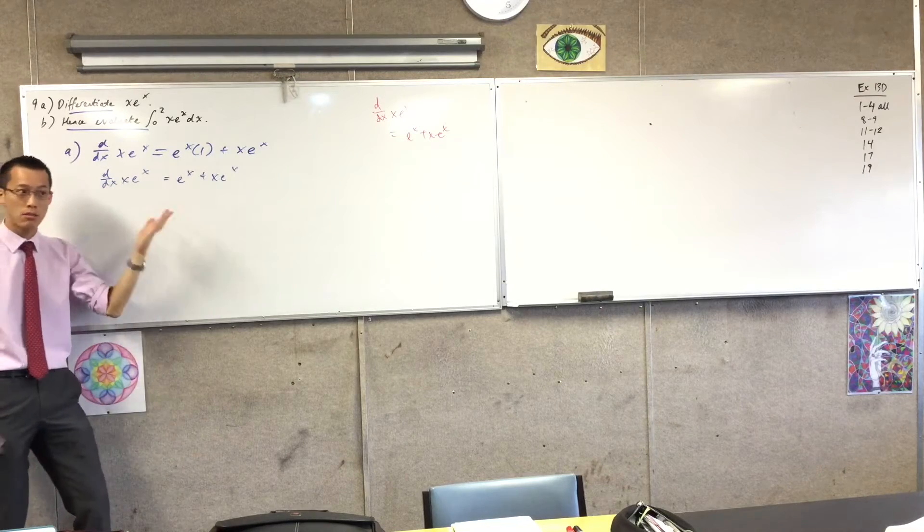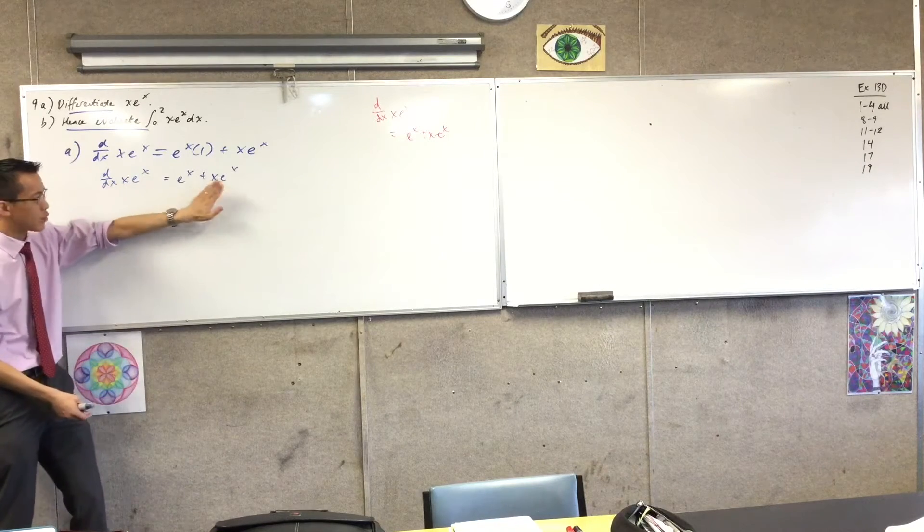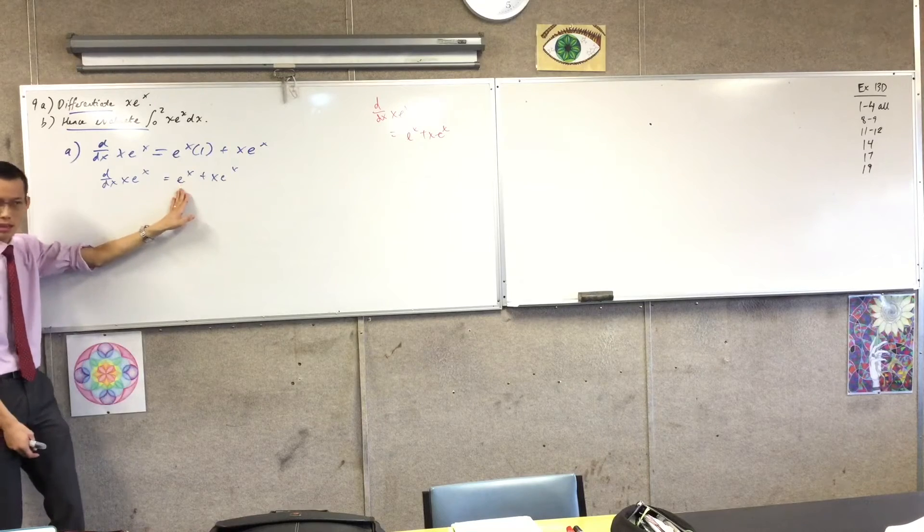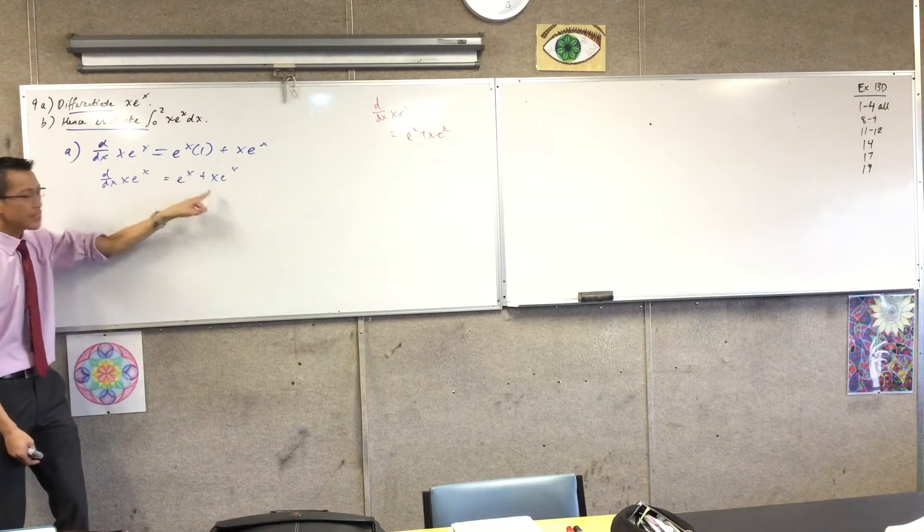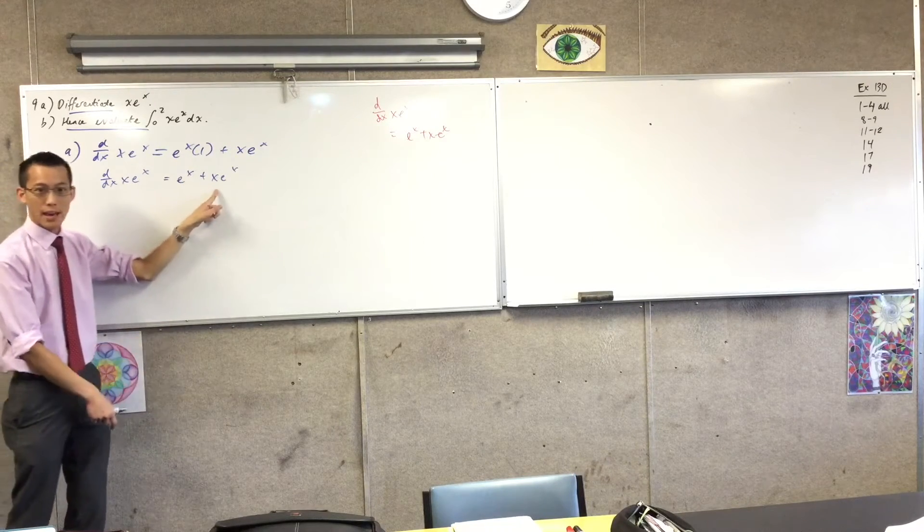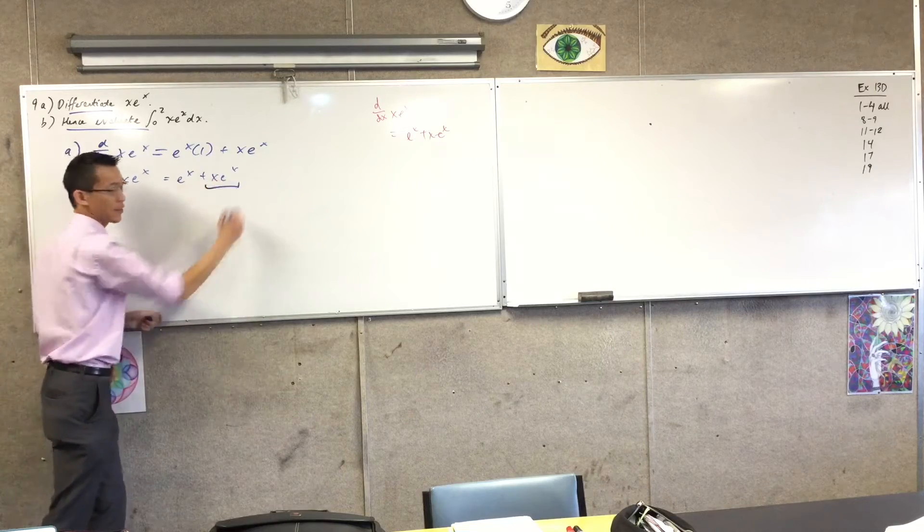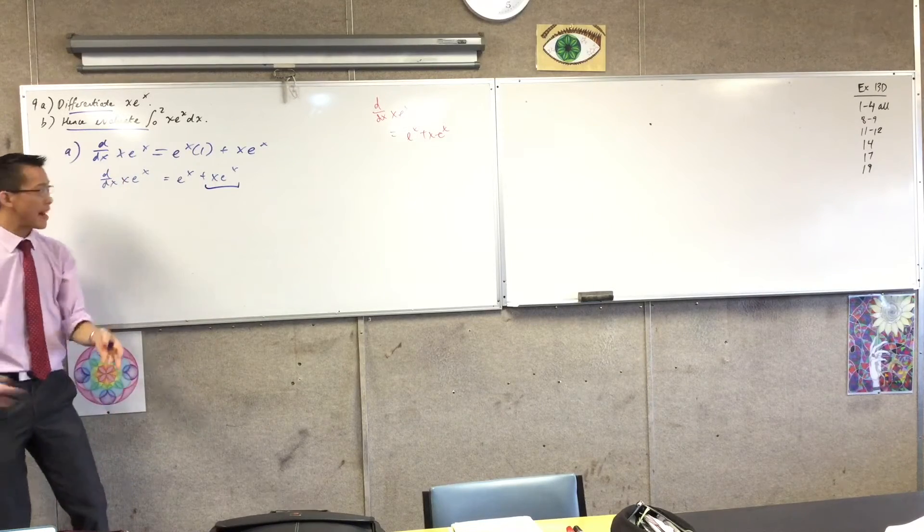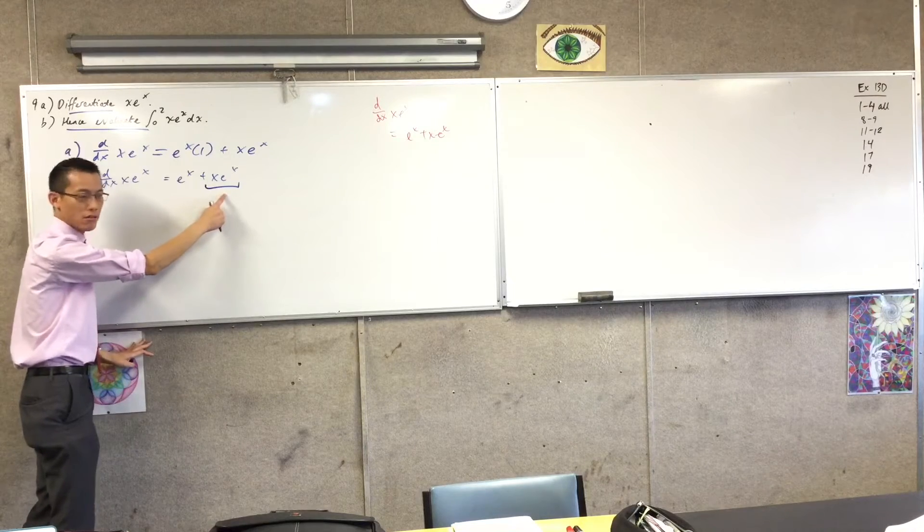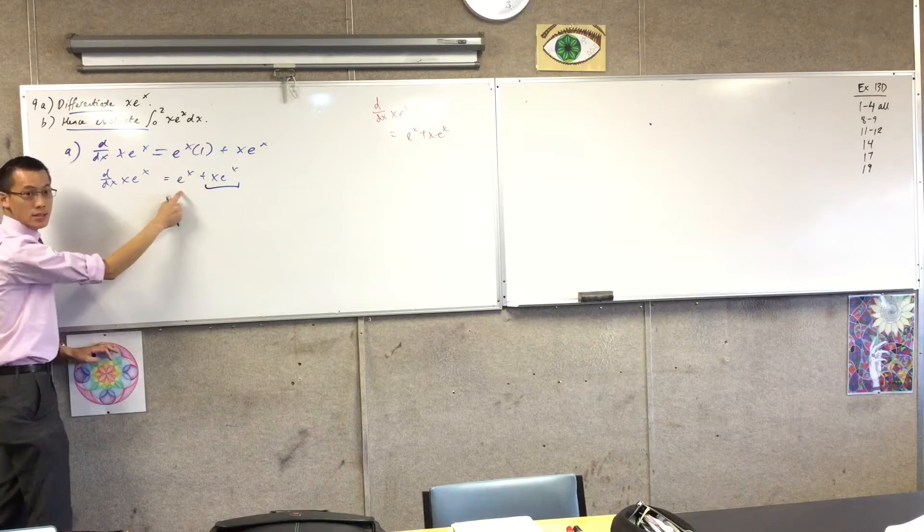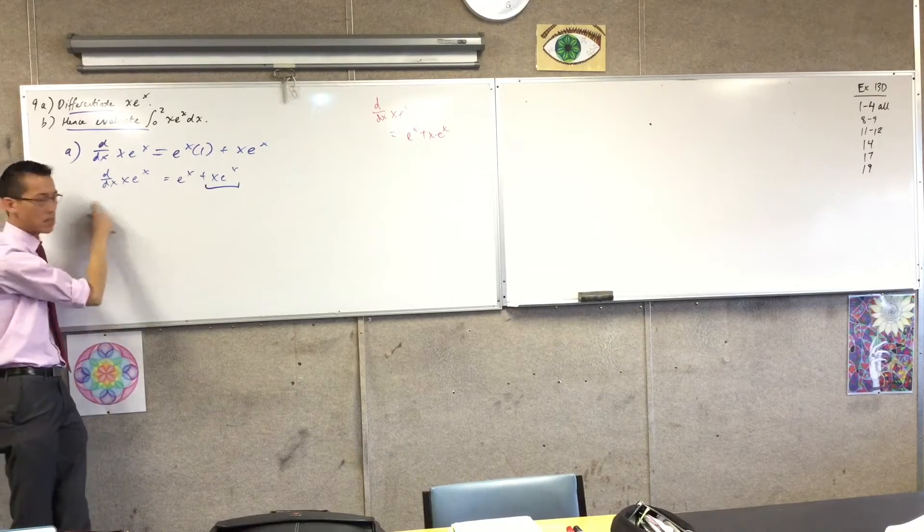I mean, e^x will always do that in some way, shape, or form. In this case, it reappears here plus another thing. Now, this is the thing I want to integrate. That part there. Specifically that part there. The reason why I highlight that is because I want to integrate this, but I don't know how. But I know how to integrate this, and I know how to integrate this.